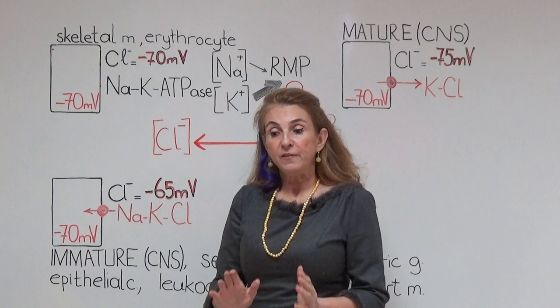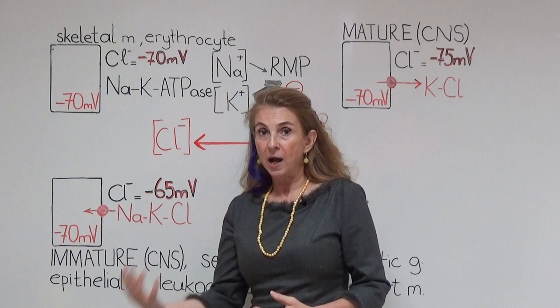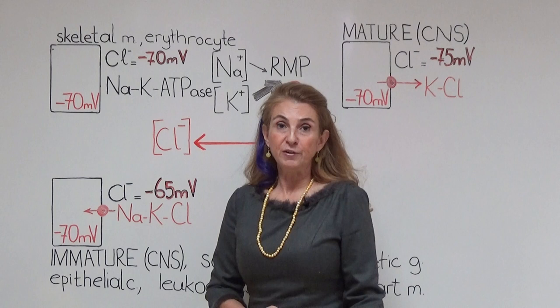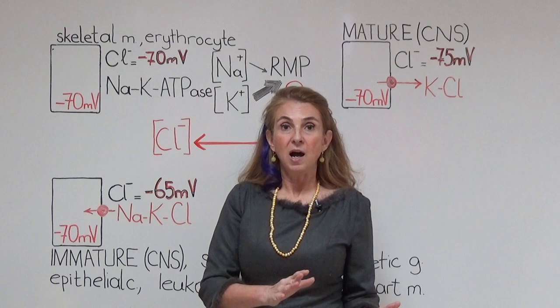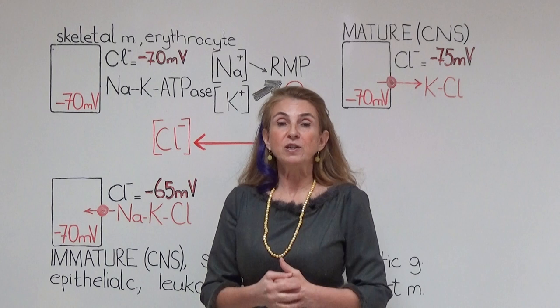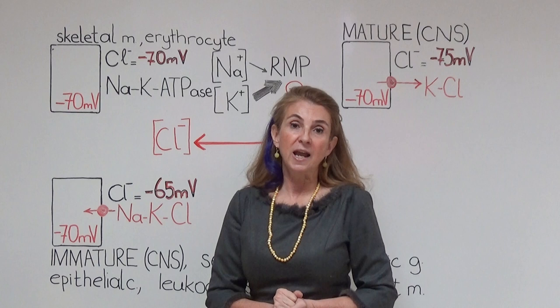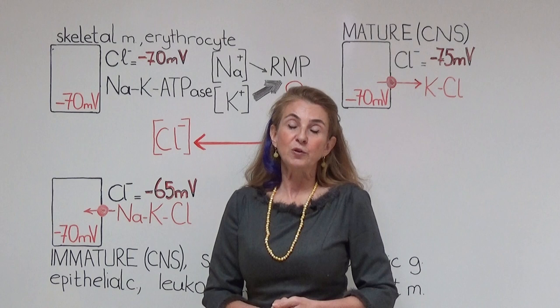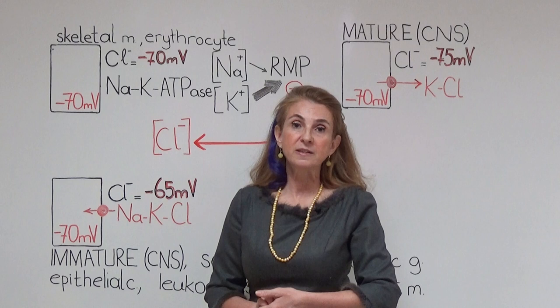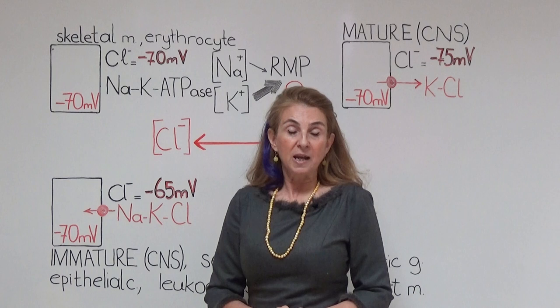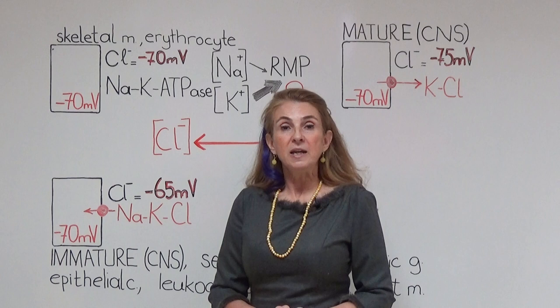If an ion has a concentration difference, ions tend to move from high to low concentration by kinetic energy — this is called diffusion. So if we want to send ions in the opposite direction and produce a concentration difference, we need a force that will overcome passive diffusion, meaning we have to use metabolic energy — ATP must be used. For sodium and potassium, sodium-potassium ATPase was discovered and even received a Nobel Prize, producing the concentration difference for those ions.